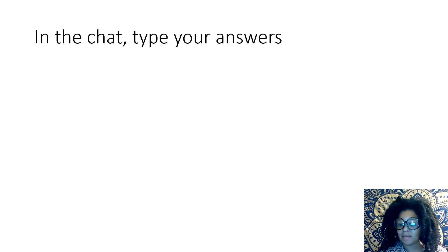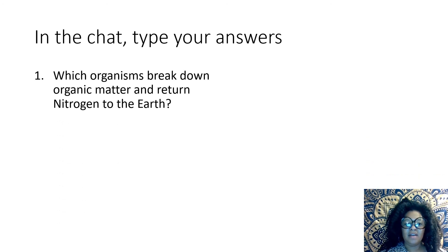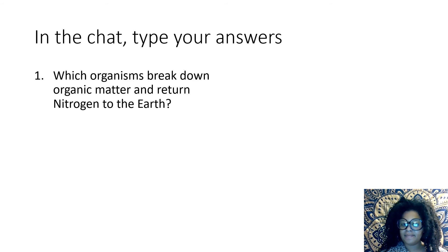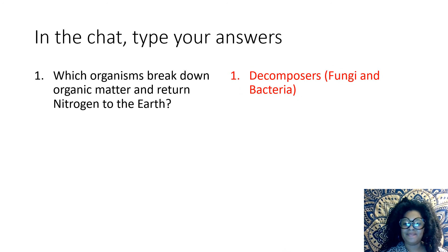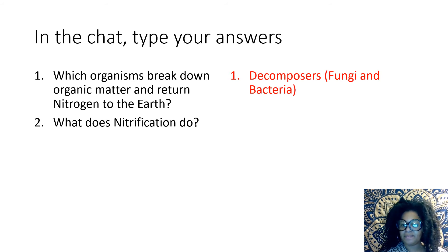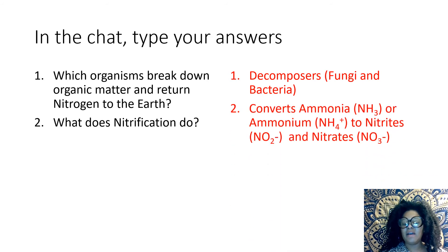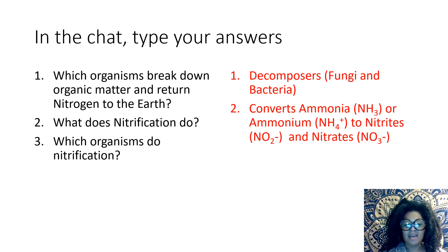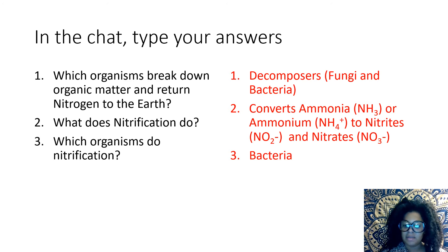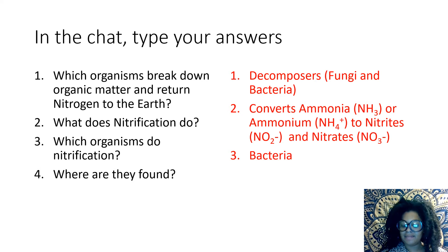Please pause the video so you can try to answer yourself before you see the answer. Which organisms break down organic matter and return nitrogen to the earth? Decomposers — fungi and bacteria. What does nitrification do? It converts ammonia or ammonium to nitrates and nitrites. Which organisms do nitrification? Bacteria — but these are a different type of bacteria called nitrifying bacteria. Where are they found? In the soil.